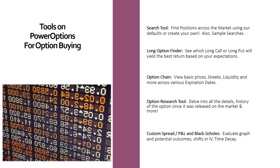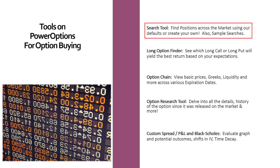Tools on Power Options for option buyers. We already saw some of those tools in that quick previous presentation. Let's quickly review what other tools there are. The search tool lets you find positions across the market using default criteria screens or create your own. There are also sample searches for you to use as a stepping stone to create your personal search.